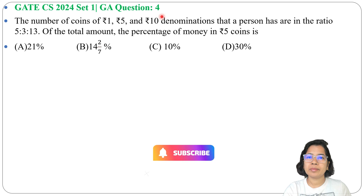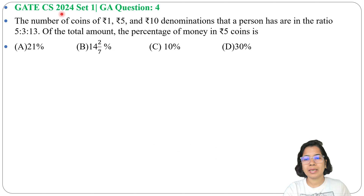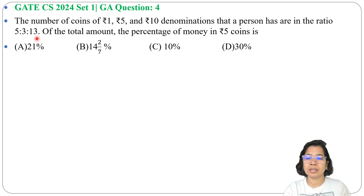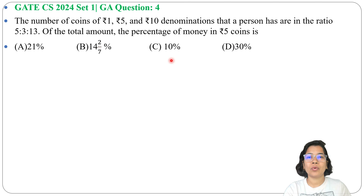Let's have one previous question of general aptitude. This question was asked in GATE CS 2024 Set 1, GA Question No. 4. The number of coins of 1 Rupee, 5 Rupees and 10 Rupees denominations that a person has are in the ratio 5:3:13. Of the total amount, the percentage of money in 5 Rupees coins is — and 4 options are given.